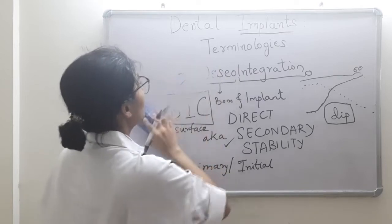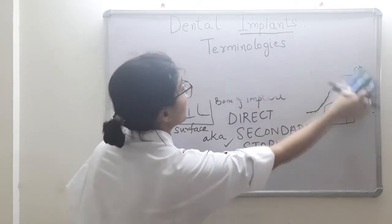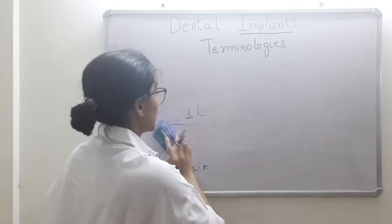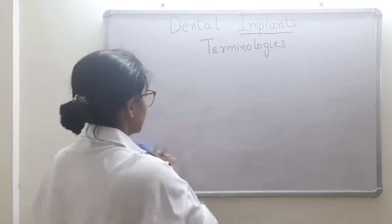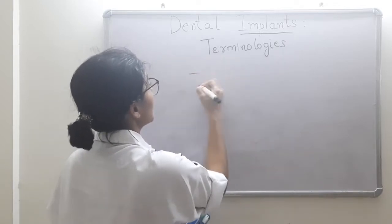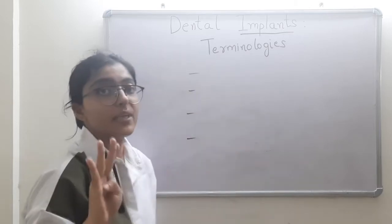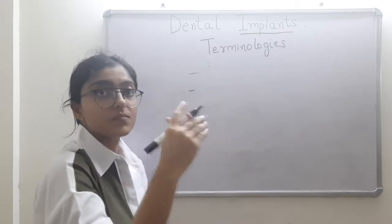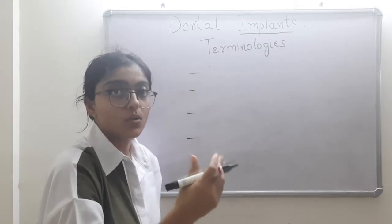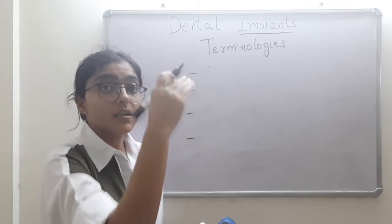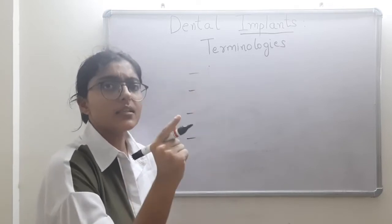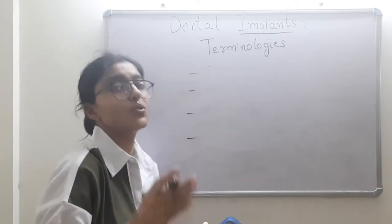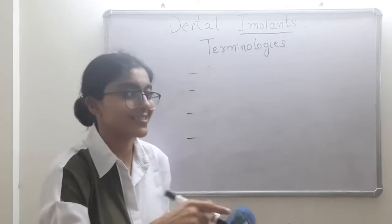Now we will discuss the Albrektsson and colleagues criteria to define a successful implant. Not every implant can be termed successful. There are four major criteria. The first is that the unattached portion of the implant — the coronal portion that remains exposed above the bone — should be immobile.